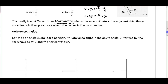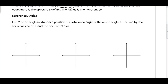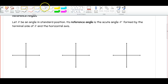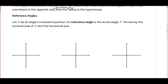Let's move on to reference angles. We're going to let theta be an angle in standard position. Remember, standard position has its initial side on the positive x-axis. The reference angle has three important requirements: it's the acute angle formed by the terminal side of theta and the horizontal axis — meaning the positive or negative x-axis.